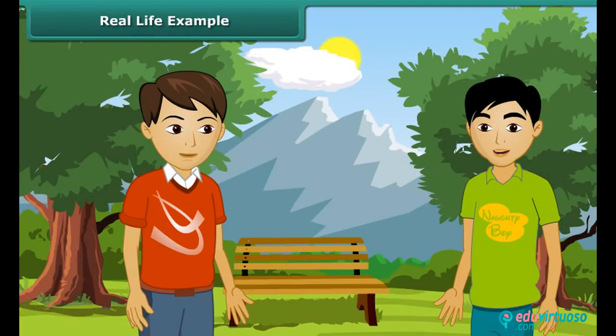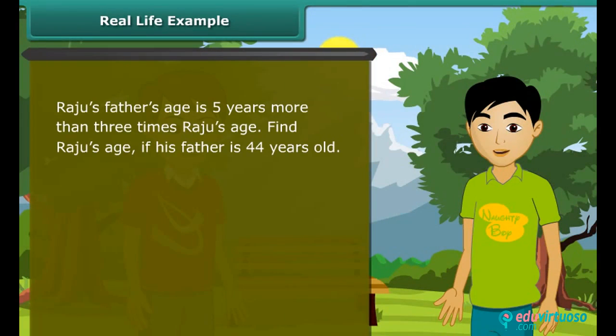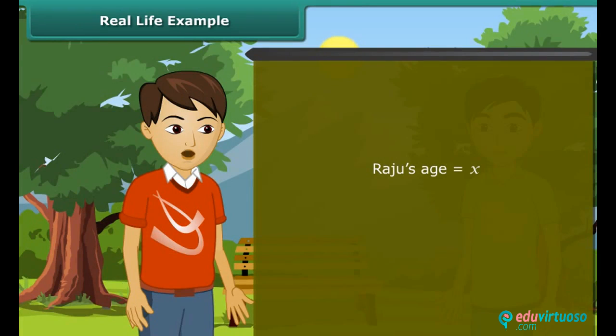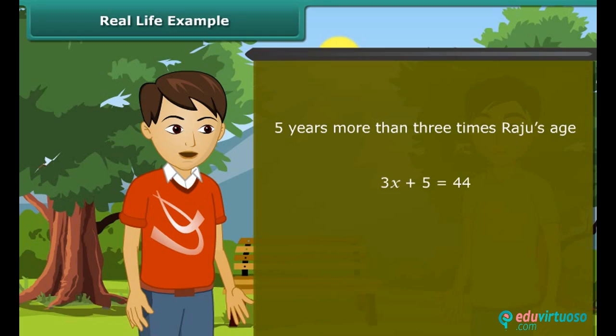Ajay, now you know to solve the equation. There is one problem for you. Ask. Raju's father's age is 5 years more than 3 times Raju's age. Now find Raju's age if his father is 44 years old. We have to find Raju's age. Therefore, we will take it as X. Now 5 years more than 3 times Raju's age is 3X plus 5, which is equal to 44.